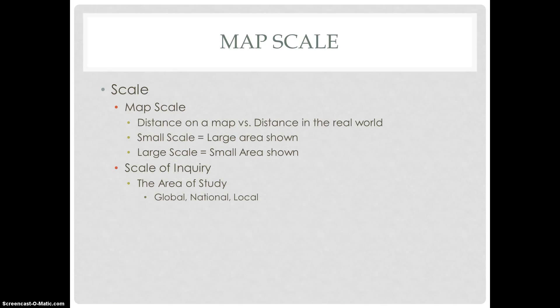Now let's talk about map scale. Map scale is the distance on a map versus the distance in the real world. There are small-scale maps, which represent a large area, and large-scale maps, which represent a small area. Another type of scale is scale of inquiry, which is the area of study — whether it be a global, national, or local area of study.